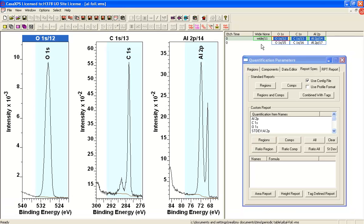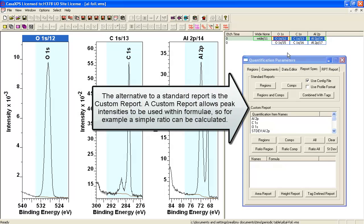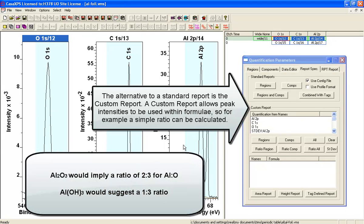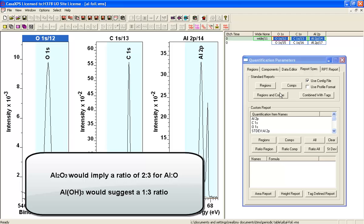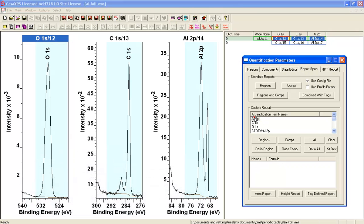So using these three regions we can produce a report. The first thing that we might want to do is see how this relates. If we've got an aluminum foil, the first thing we would like to see is that the aluminum and the oxygen are in a given proportion. So let's go to the report spec and look at what the ratio is of oxygen to aluminum.